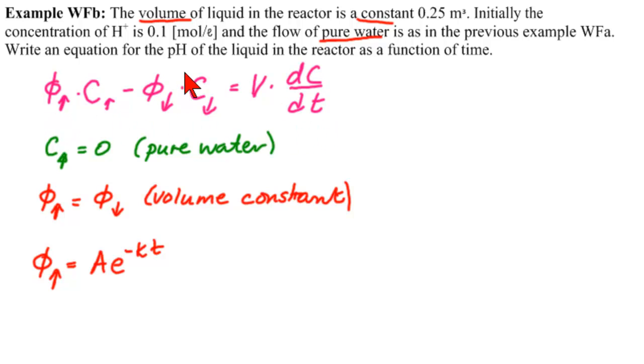The last thing we need to notice is, although this will give us the concentration, we actually need a function for pH. So we will get C equal to C of t when we solve the differential equation, but we actually need pH of t, which will be minus log of C of t.